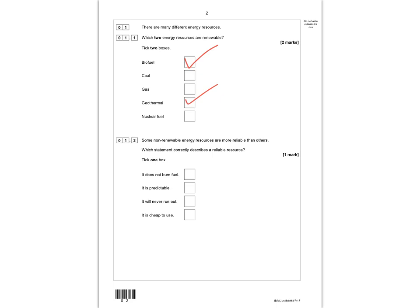In question 1.2, it says some non-renewable energy resources are more reliable than others. Which statement correctly describes a reliable resource? A reliable resource is one that's predictable, so you know when you'll be able to use it. 'It does not burn fuel' is incorrect. 'It will never run out' is incorrect because coal, gas, and nuclear are all reliable and they will run out. 'It's cheap to use' is not necessarily the case. Basically, you can depend on the energy whenever you need it.